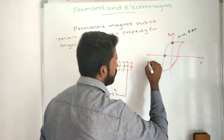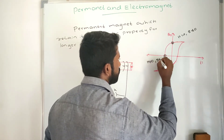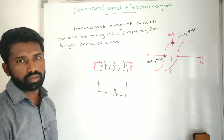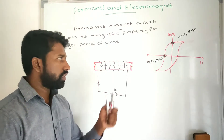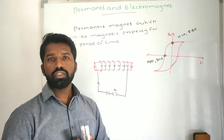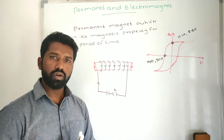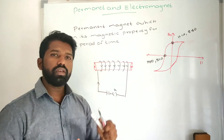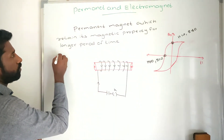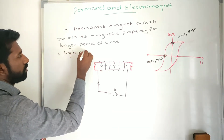The coercivity point is where H is not equal to zero but B is equal to zero. Coercivity tells us how much magnetic power a material can hold. So the materials chosen for a permanent magnet should have both high retentivity and high coercivity.